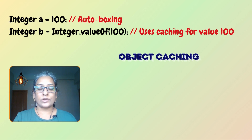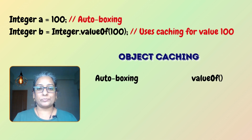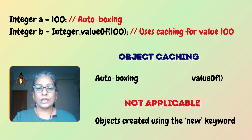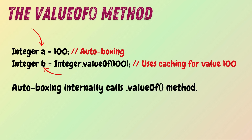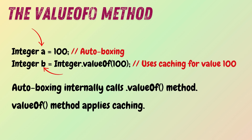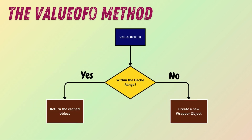The object caching mechanism for wrapper classes like Integer is used when creating objects via autoboxing or the valueOf method. It does not apply when creating the wrapper object using the new operator and constructor. Autoboxing internally calls the valueOf method, so both approaches use caching for values within the range. The valueOf method checks if the integer value falls within the cached range — if it does, it returns the cached object; otherwise it creates a new Integer object.